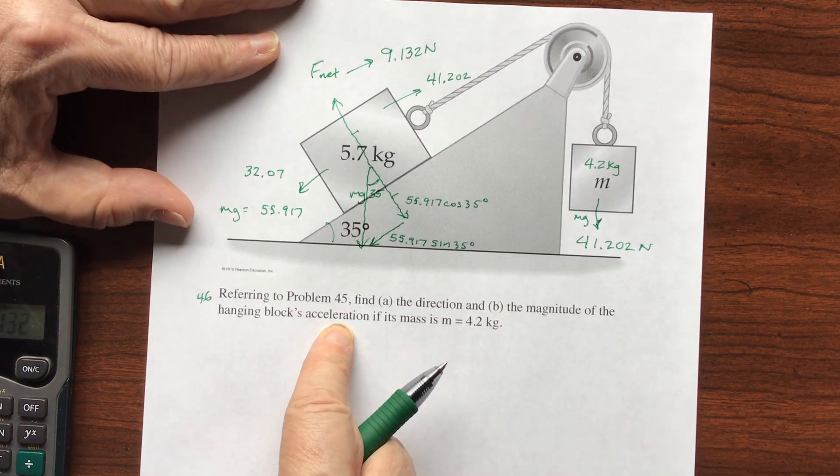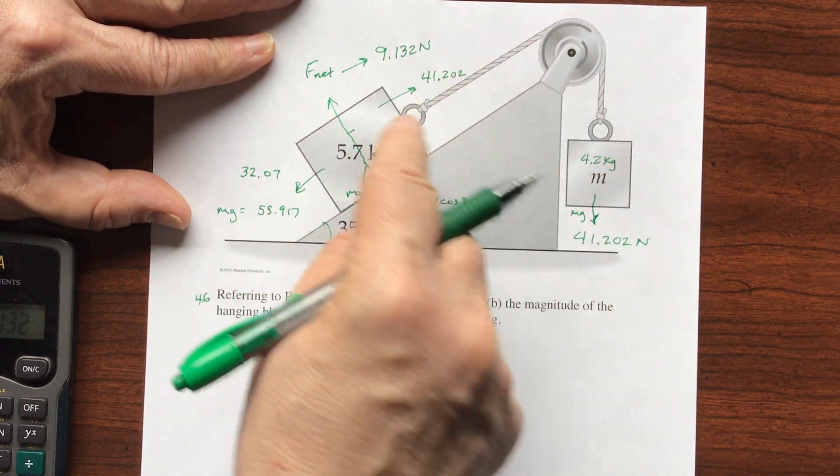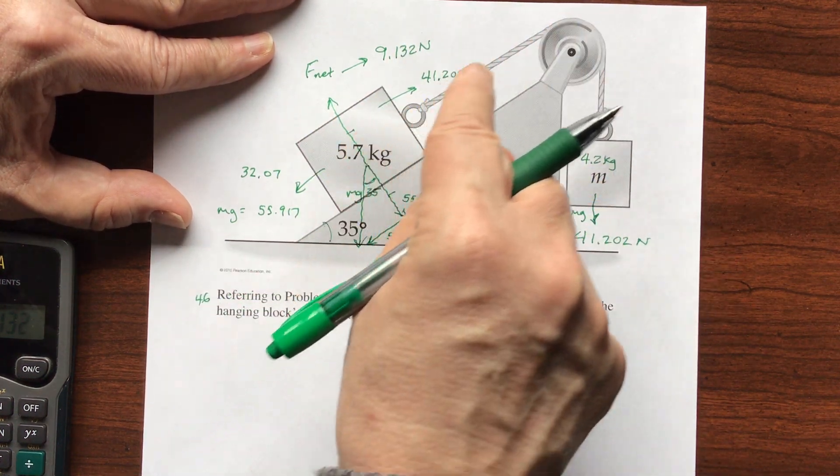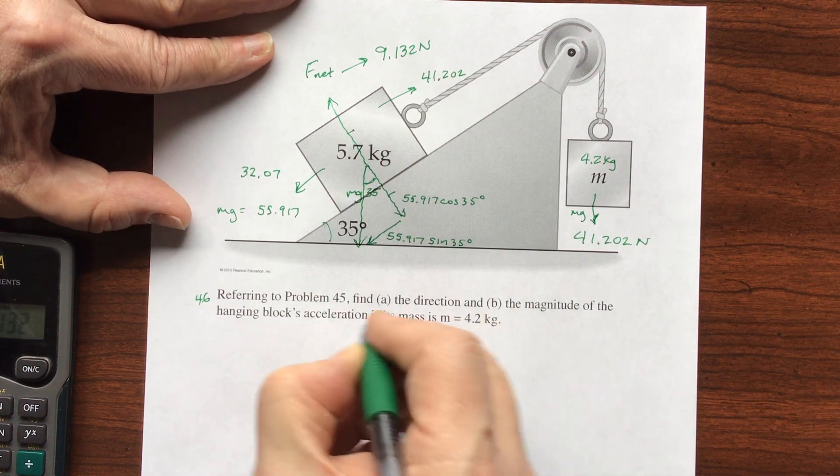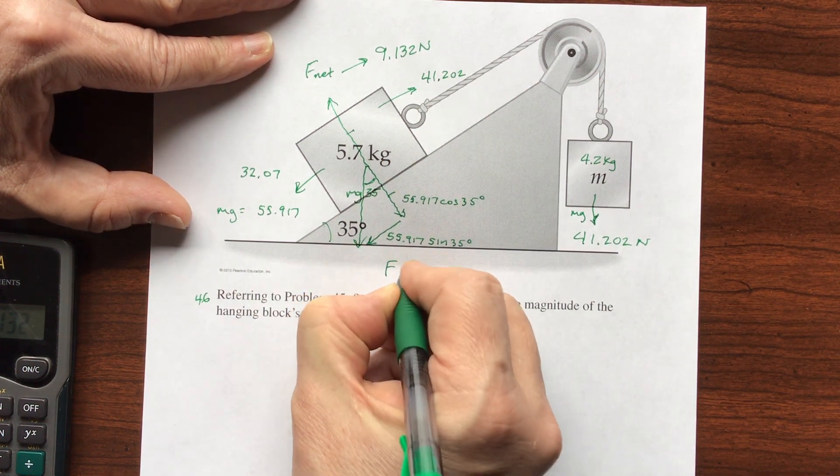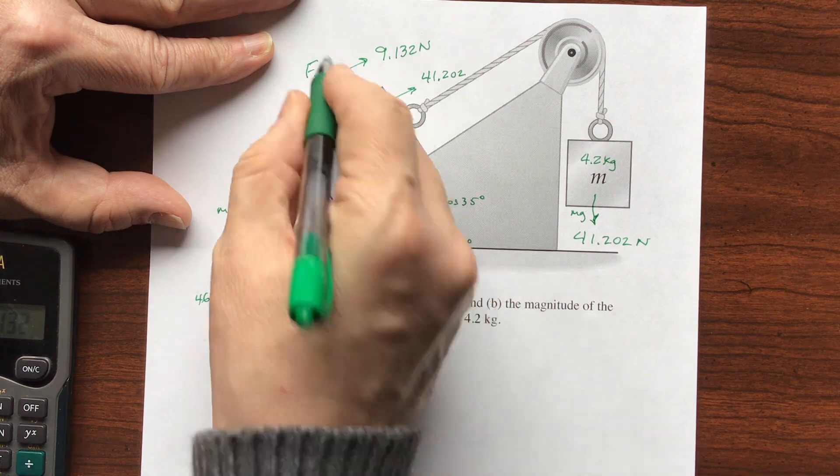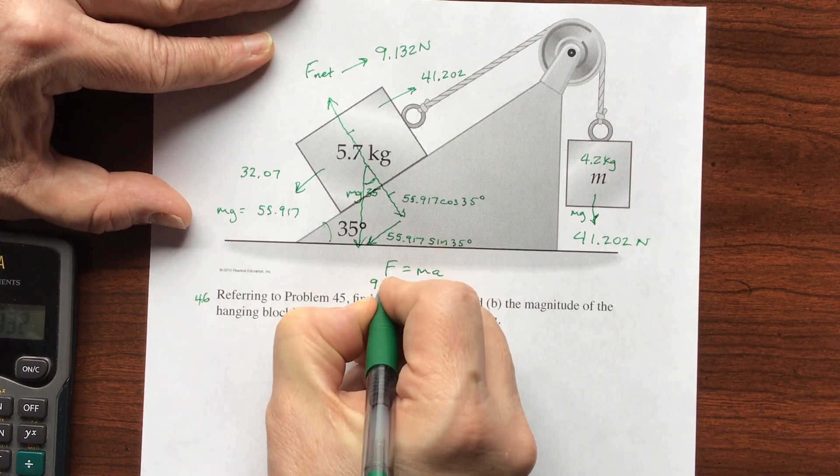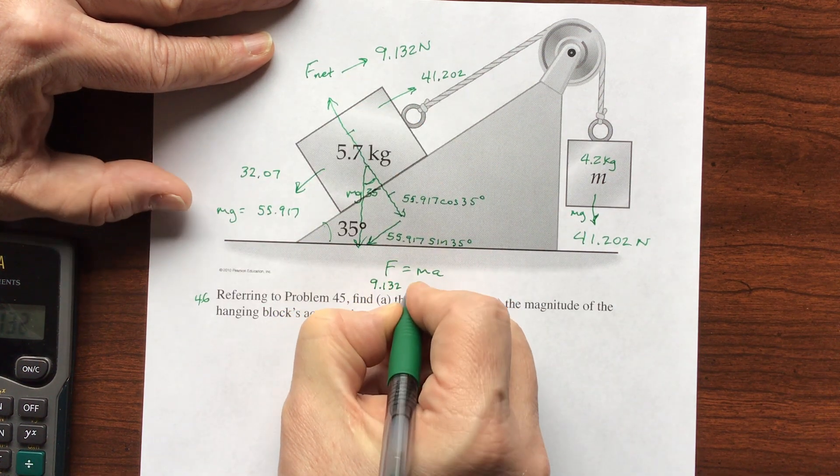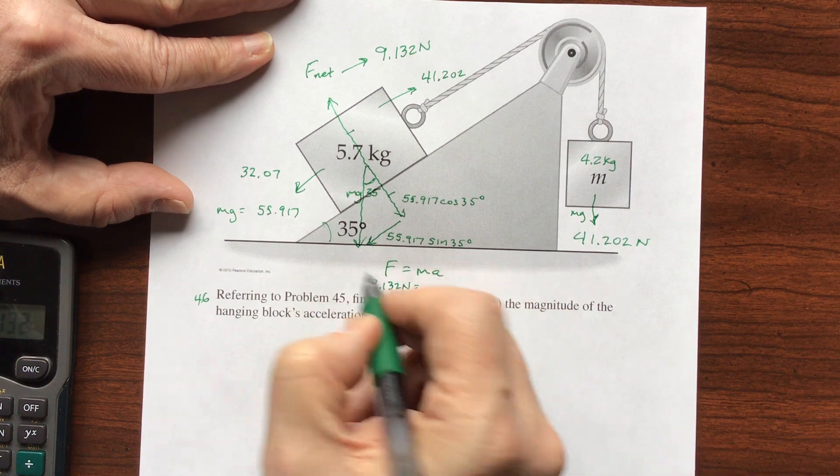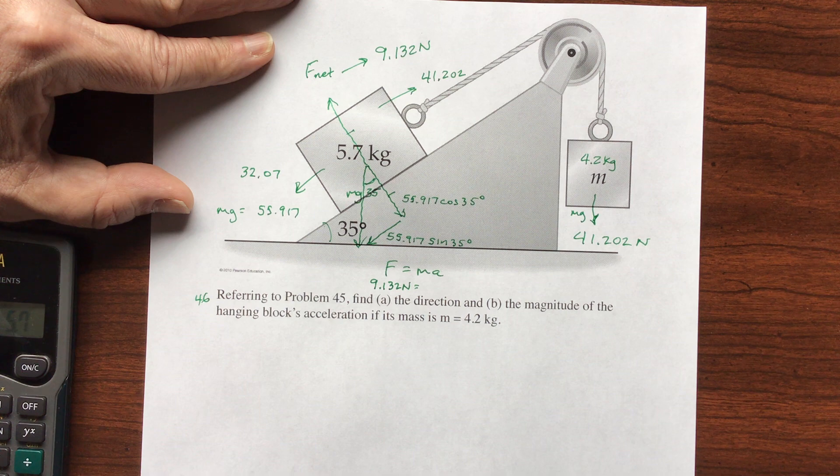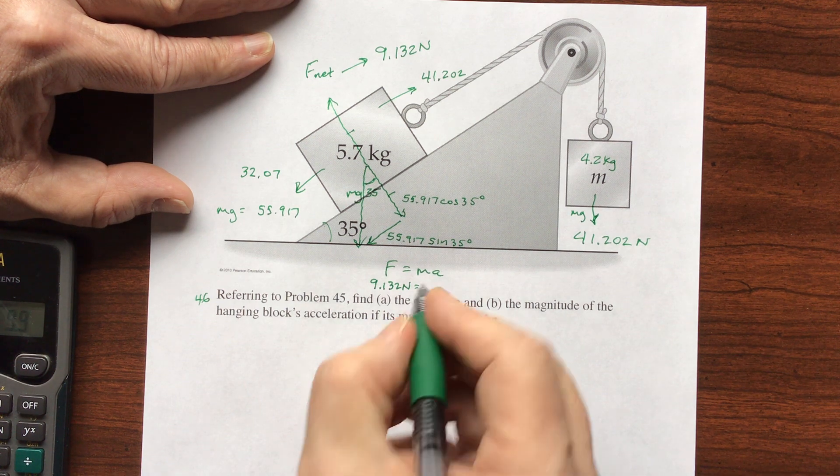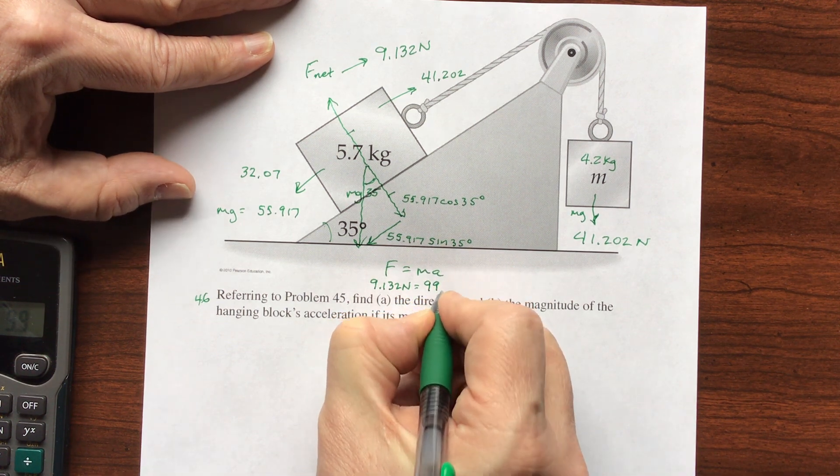Now if I want the acceleration, I want the acceleration of the entire system because this is going to be lowering and this is going to be raising. So both of these masses have to be added. So when I come down here to do F equals MA, my net force is F, so this is 9.132 newtons. My kilograms is going to be 5.7 plus 4.2, so this is 9.9 kilograms.